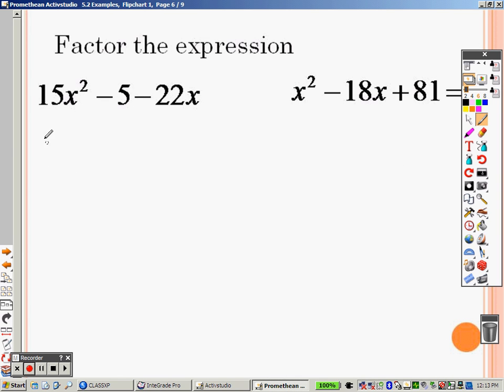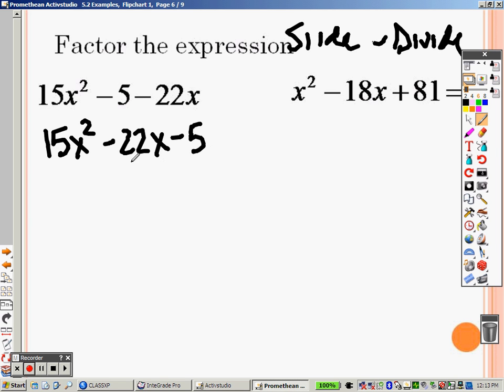Okay, so taking a look at another one. 15x squared. I've got to write it in order. Minus 22x minus 5. I've got a number out in front. So let's slide and divide. Slide that over. So I end up getting x squared minus 22x and 15 times a negative 5. That gives me a negative 75.